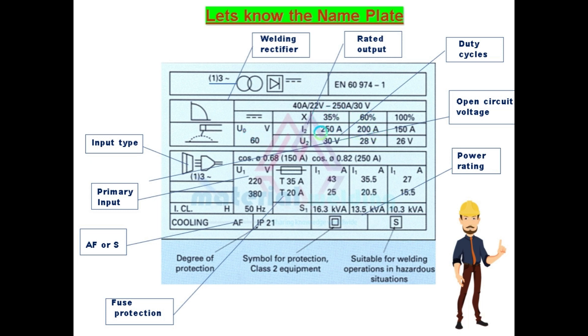With this duty cycle data, we can see if you want to run the welding power source continuously without any stop, this power source can give maximum 150 ampere and 26 volt. If we want to use it for the maximum output current, we can only use for 35% duty cycle.